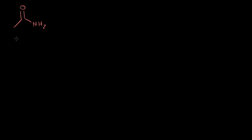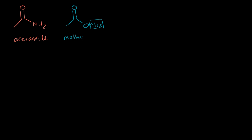I'll compare the derivatives of acetic acid. The first one we saw was the amide — acetamide. Then the next one was the ester, the one I just corrected the mistake on. This is methyl acetate, where the CH3 group is where the methyl part comes from.